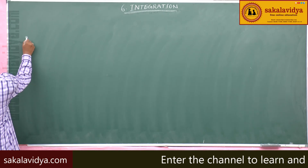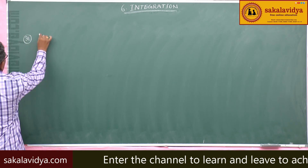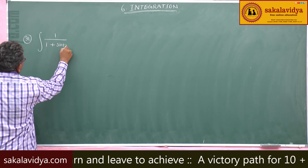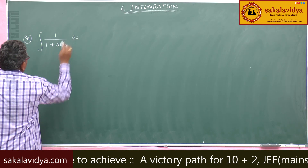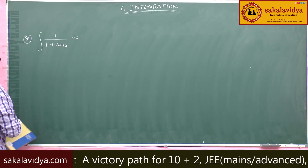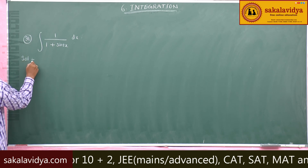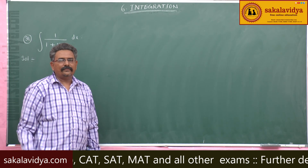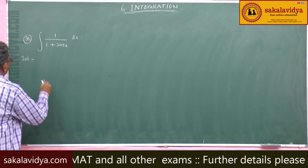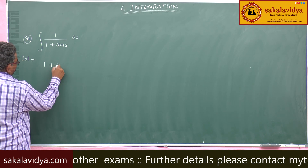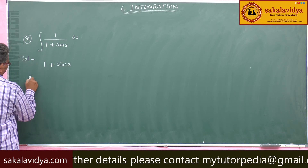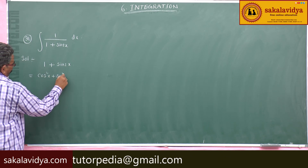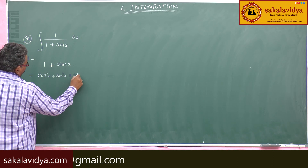31st problem. Evaluate integral of 1 by 1 plus sin 2x dx. First, let us simplify 1 plus sin 2x using trigonometric functions. This 1 plus sin 2x can be written as: 1 is replaced by cos square x plus sin square x, and sin 2x is 2 sin x cos x.